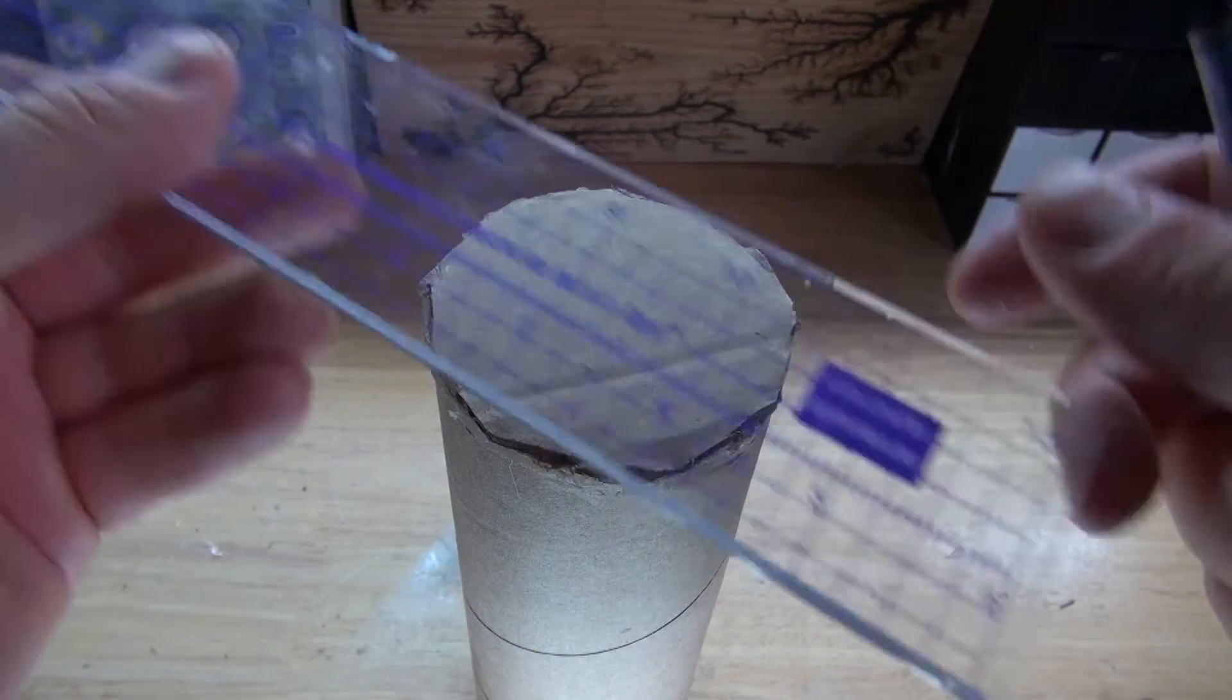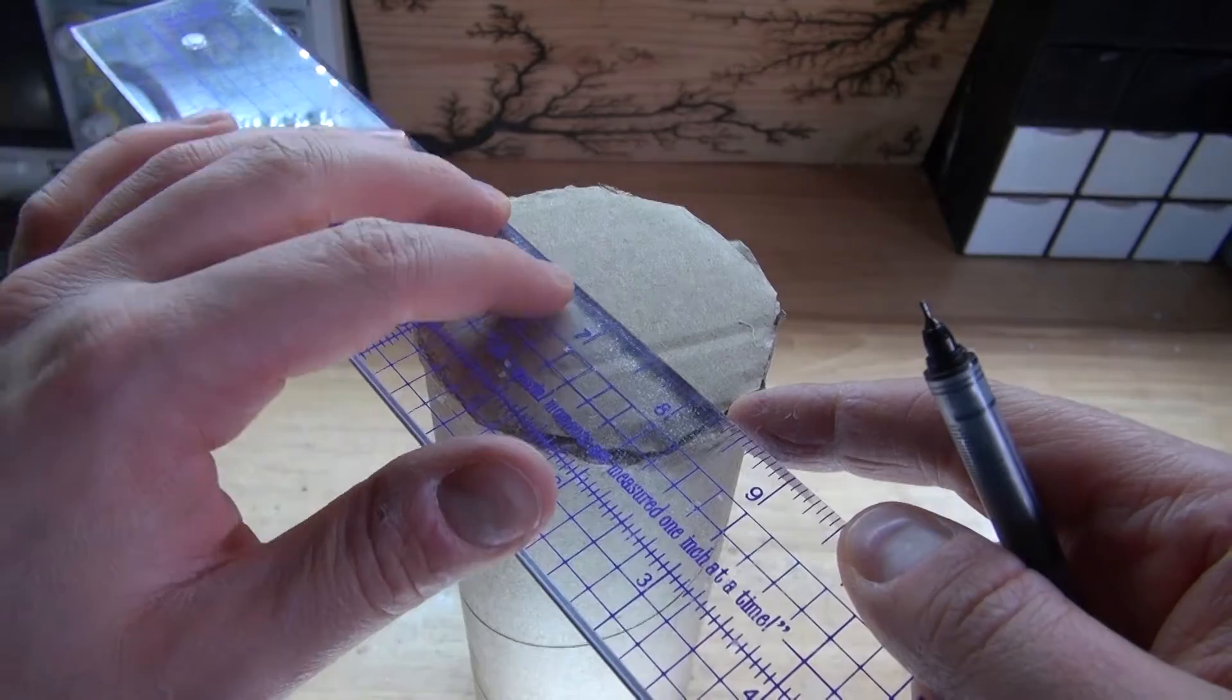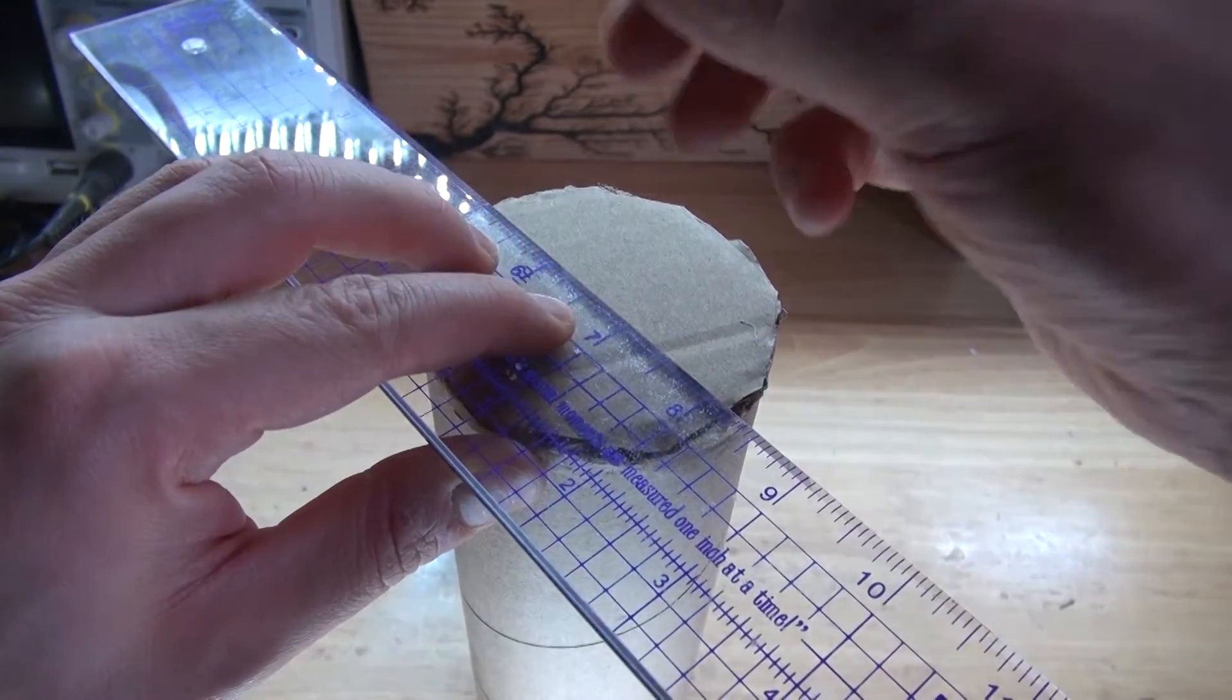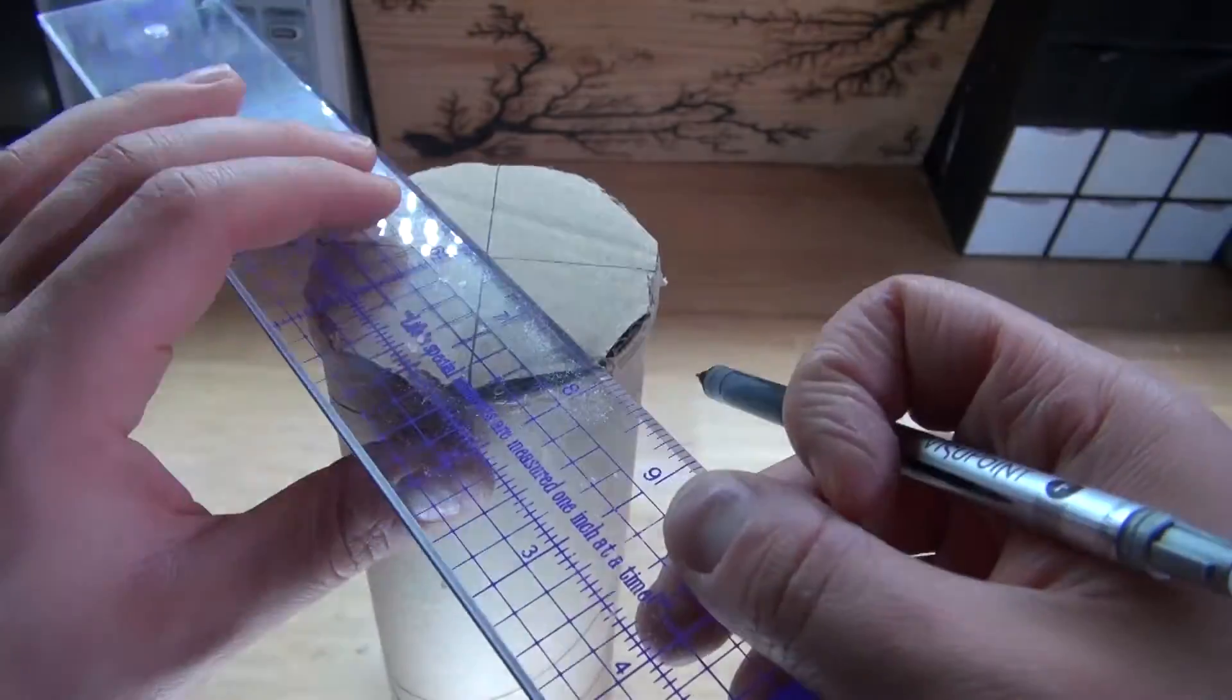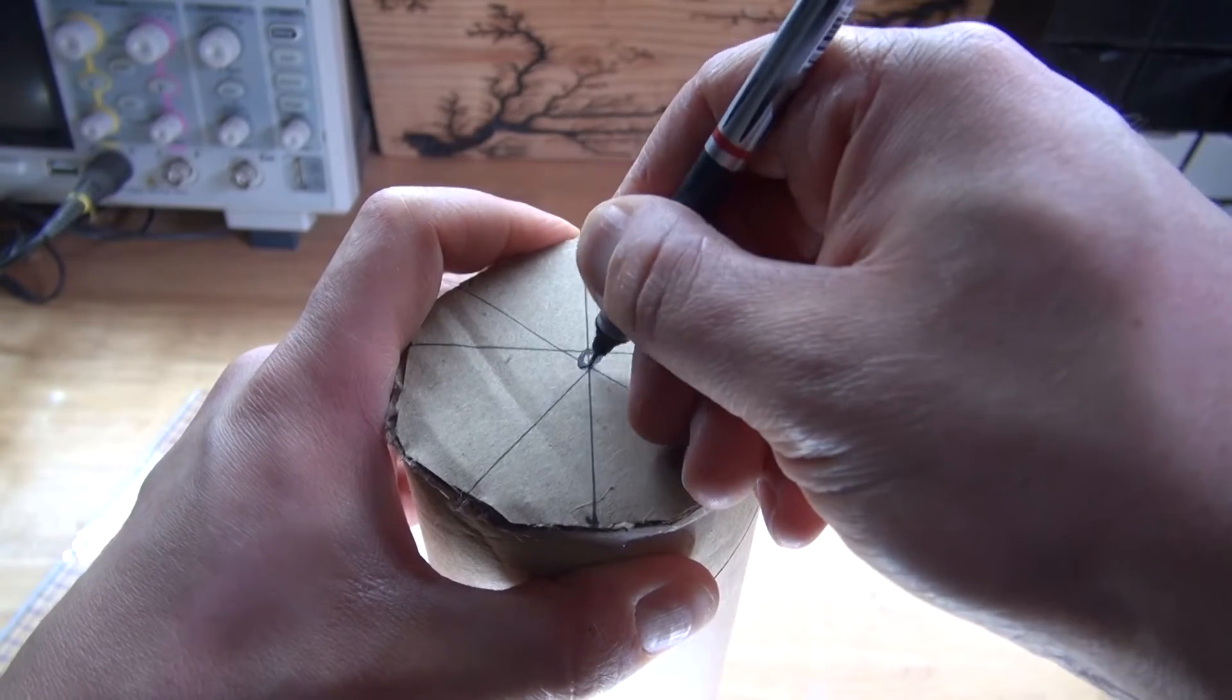Next, I need to find the center of this cardboard. Simply go over to the diameter and make a line going across the diameter. And do this several times, and then you get a rough estimation of where the center is. This right here is the center.